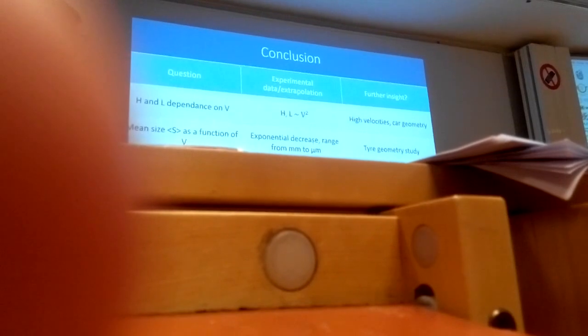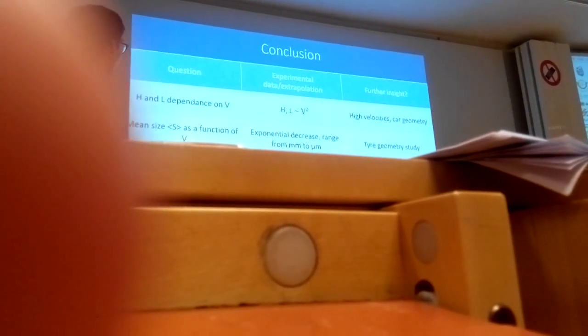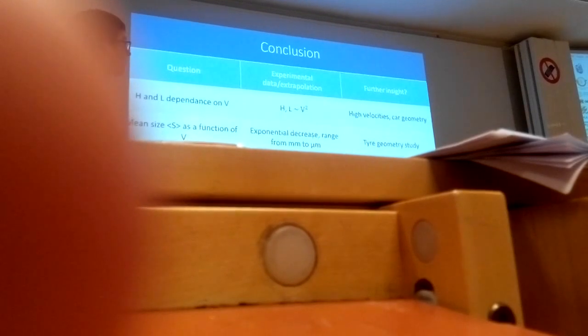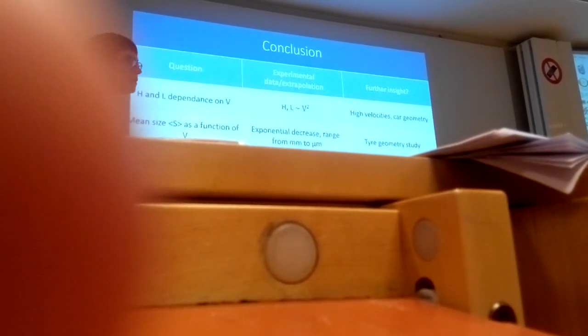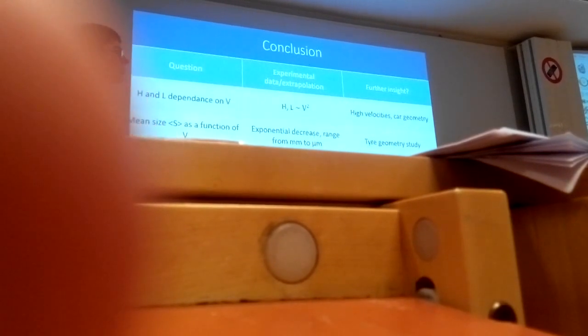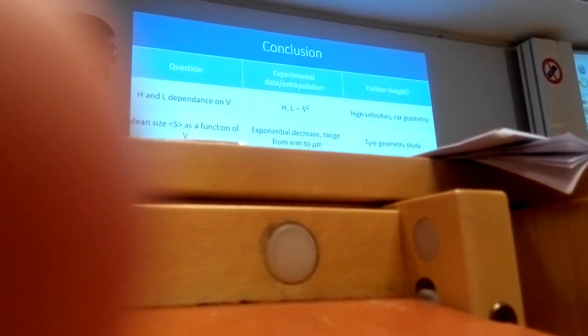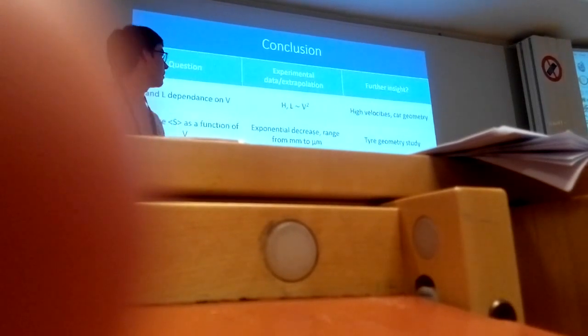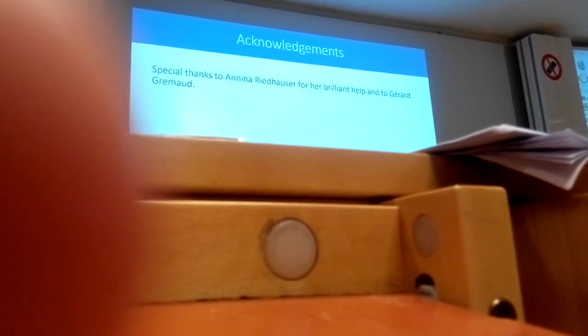For further insight on this question, we could consider high velocity and the car geometries. Also, for the mean size of the droplet, we would need to consider the tire geometry. Finally, for the visibility decrease, I only considered the intensity decrease, but there would be also mean diffusion and spatial distribution of the droplet. I would like to thank my partner for this experiment.